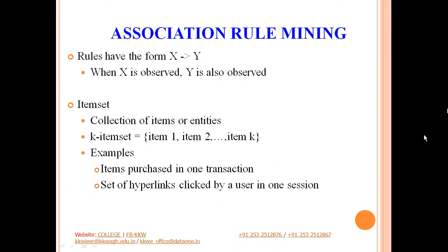How do we represent association rules? Any association rule is of the form X → Y, meaning when X is observed, Y is also observed. X is the antecedent (the 'if' part) and Y is the consequent (the 'then' part). So if the customer purchases X, he or she also purchases Y. An item set is a collection of items that a customer wishes to purchase. A k-item set indicates k items in the item set: a one-item set has a single item, a two-item set has a pair, and so on.